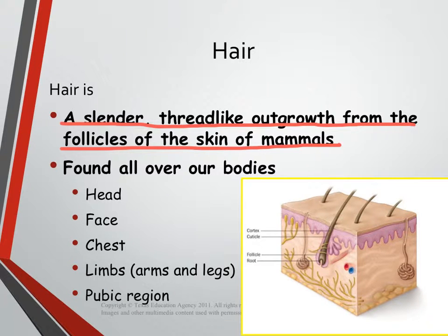So today we're talking about hair. The first thing that you need to know is the definition for hair. Hair is a slender or thin thread-like outgrowth from the follicles of the skin of mammals — just a thin structure that grows out of our skin, predominantly our heads and our arms and legs, but of course there are other places on your body that you will have hair.